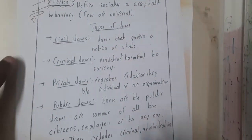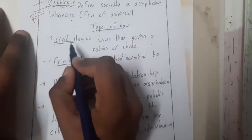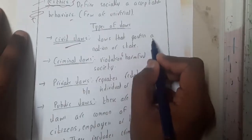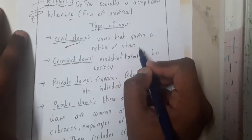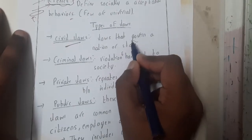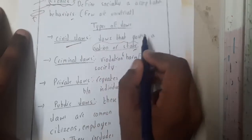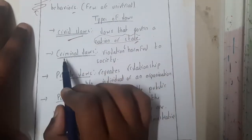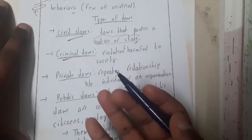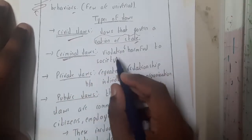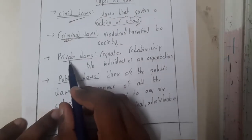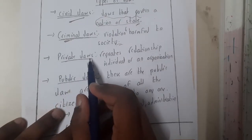Now let us go through some types of laws. The first type is civil law — laws that govern a nation or state. Similarly, criminal laws, as the name suggests, deal with violations that are harmful to society.